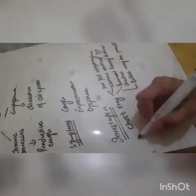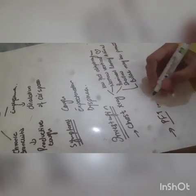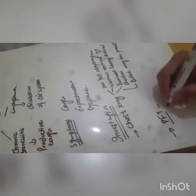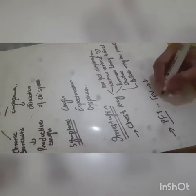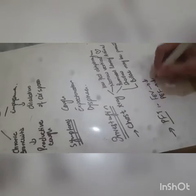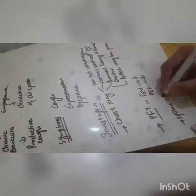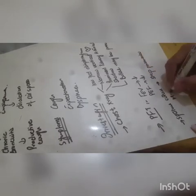After that, we will go to PFT, which will reveal obstructive lung disease. The forced expiratory volume is reduced, and PEF is also reduced. Then we will go to the sputum culture. In sputum culture, we are going to see the presence of Streptococcus pneumoniae and H. influenzae in the sputum.